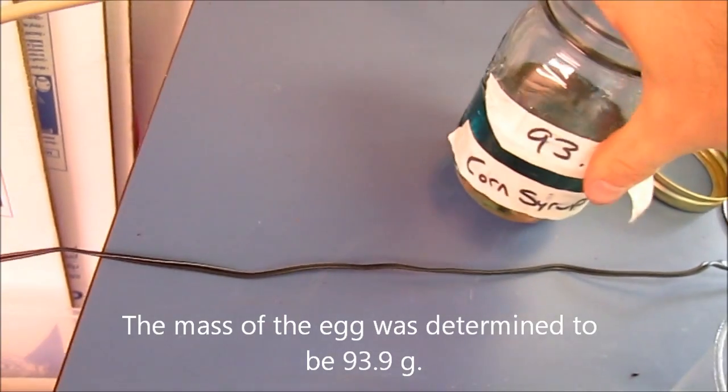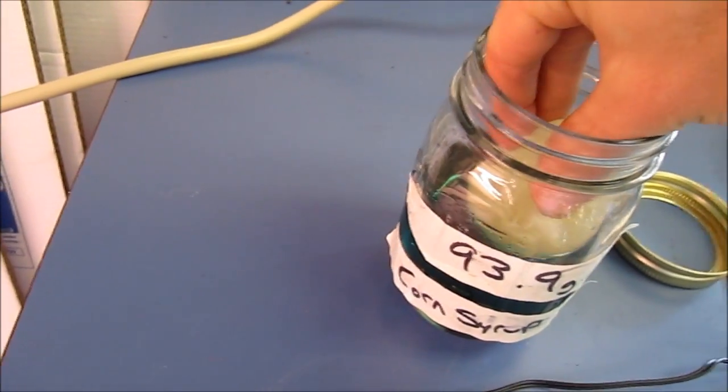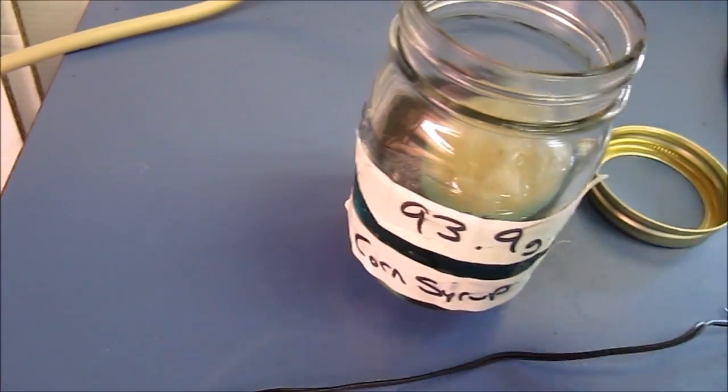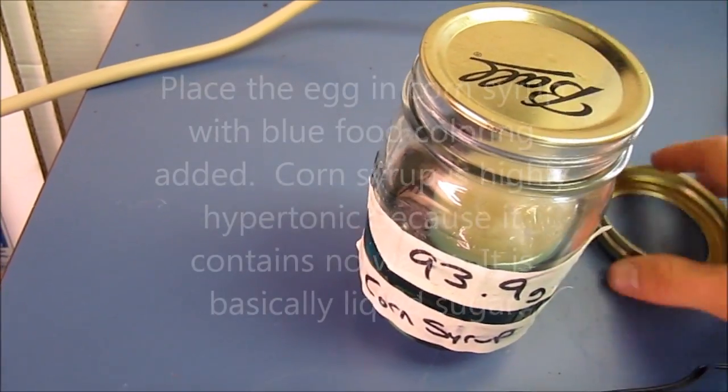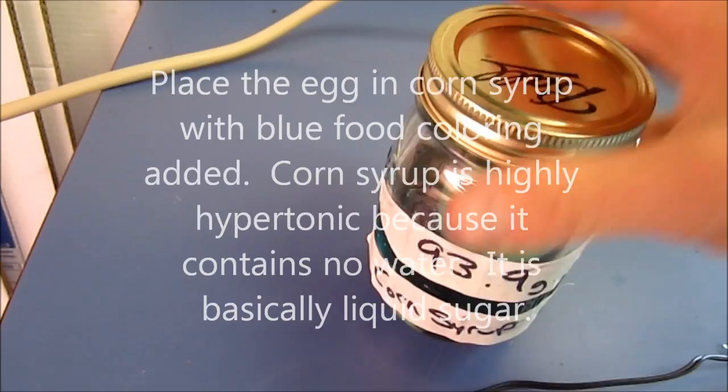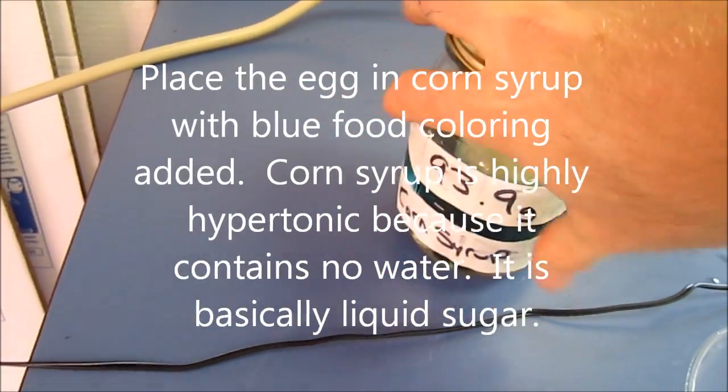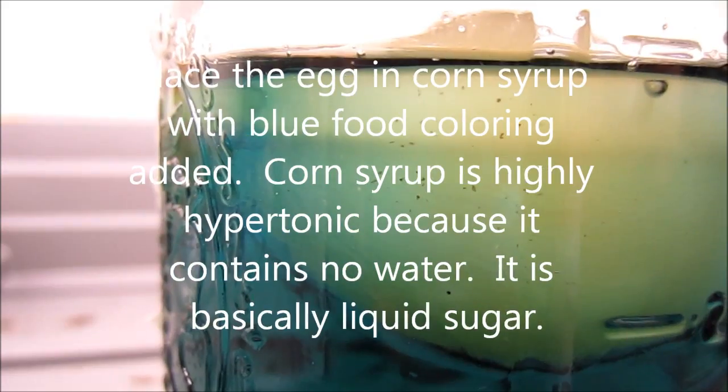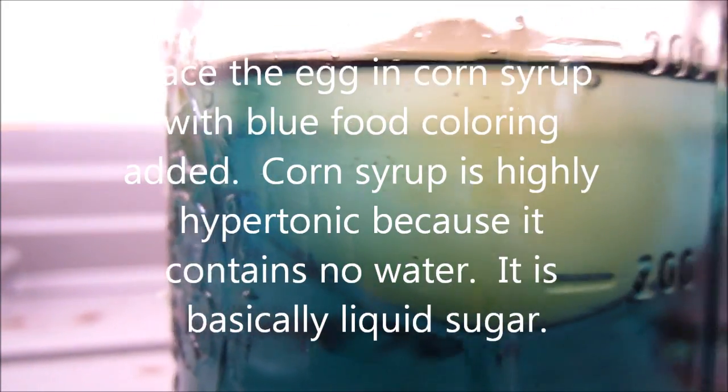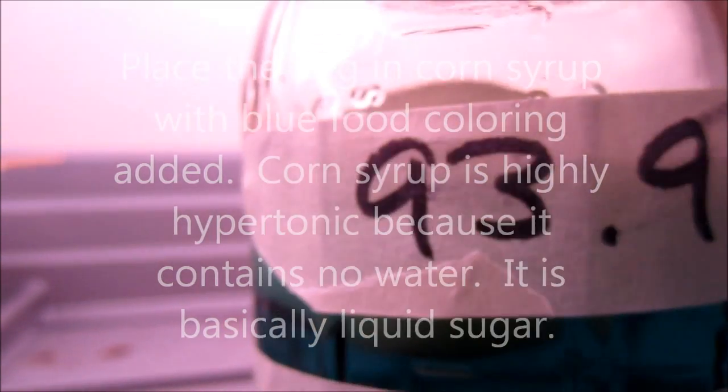We're then going to write this on this jar and we're going to put that egg in corn syrup. I've dyed the corn syrup blue so we can track the movement of liquid into or out of the egg. Now remember, corn syrup is hypertonic. To say corn syrup is hypertonic is almost an understatement. Corn syrup is incredibly hypertonic because there's no water in it, it's just liquid sugar.